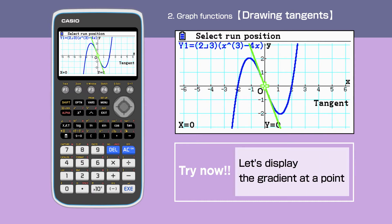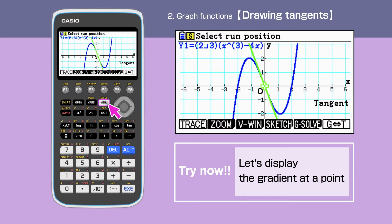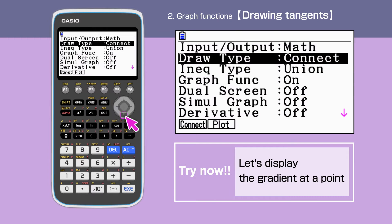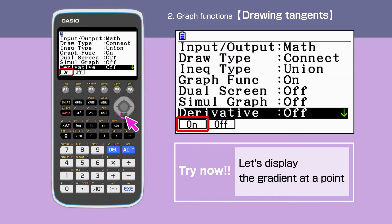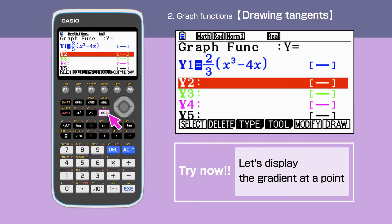The calculator can also work out the gradient at the point. For this, press Shift and switch on the derivative.